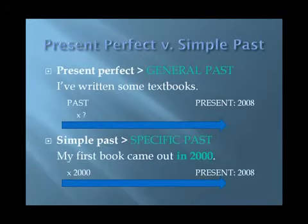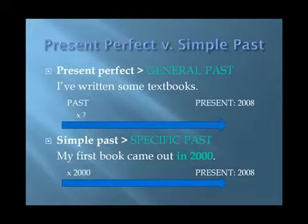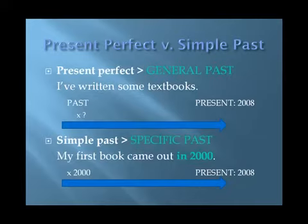Now, in light of our third reason, let's make another contrast between the present perfect and the simple past. The present perfect can express a general past: 'I've written some textbooks' — when exactly? The date isn't specified. With the simple past, we name specifics: 'My first book came out in 2000.' So as soon as we have a specific date and we can show a point on a timeline, we need to use the simple past, not the present perfect.